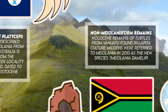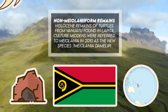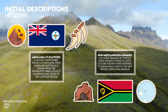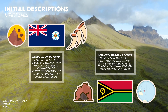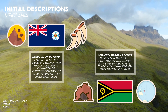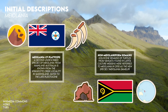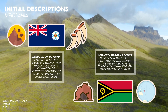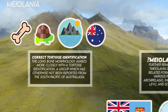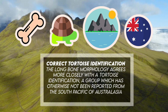Holocene remains of turtles from Vanuatu found in Lapita culture middens were referred to Myolania in 2010 as the new species Myolania damolipi. However, upon closer inspection, their morphology appears to be non-myelaniform, and no parietal horns — a distinctive trait of Myolania — have been found at any locality in Vanuatu, despite being one of the most common finds on Walpole and Lord Howe. The long bone morphology agrees more closely with a tortoise identification, a group which has otherwise not been reported from the South Pacific or Australasia.